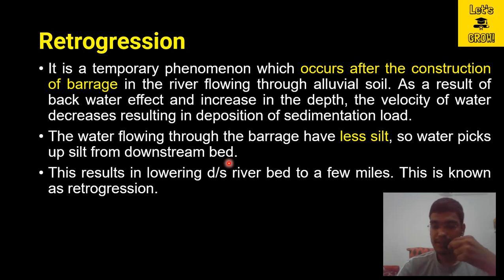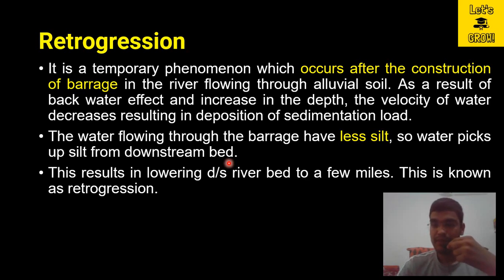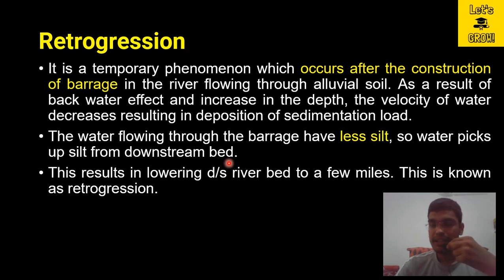When water was coming from upstream it was full of sediment, but now that sediment is deposited upstream of the barrage. So in the downstream, whatever water is coming has less silt, and that water will try to erode the bed of the river or channel in the downstream. This results in the lowering of the downstream river bed over a few miles.